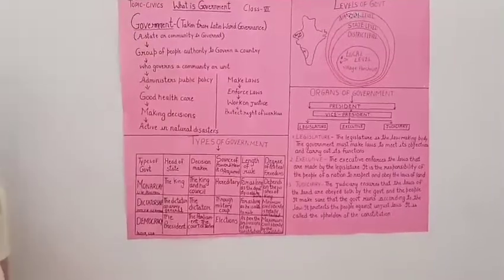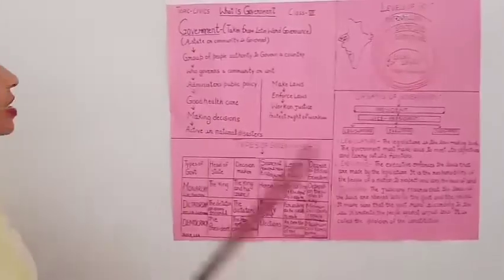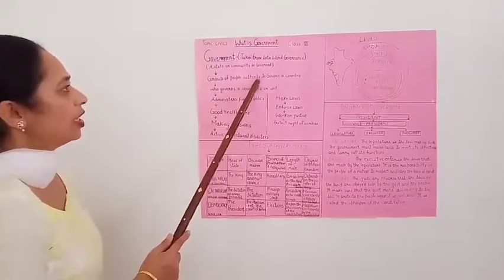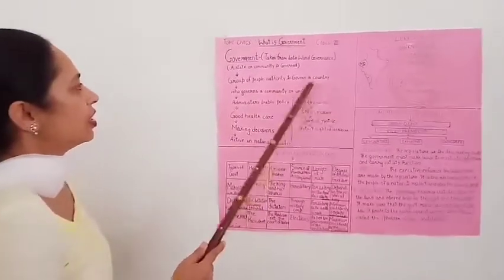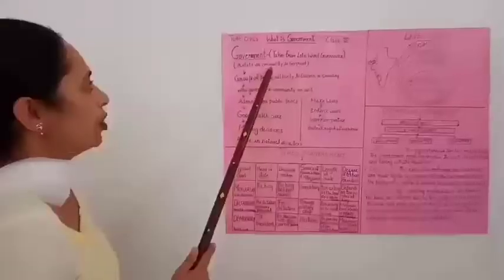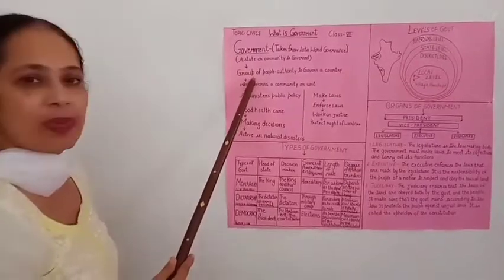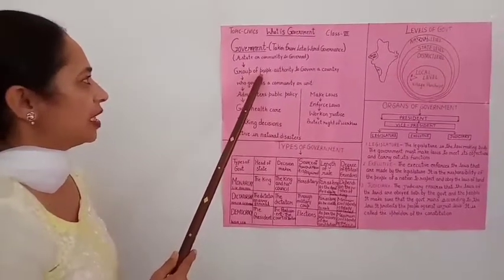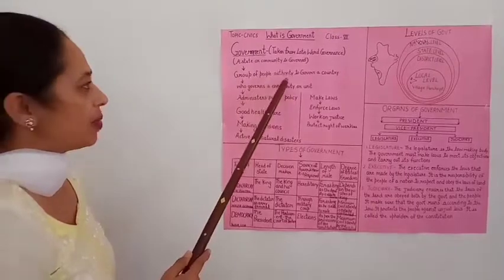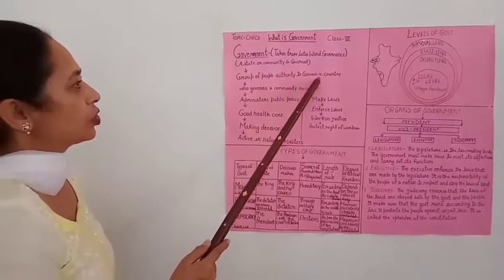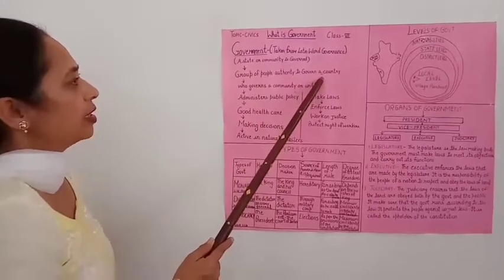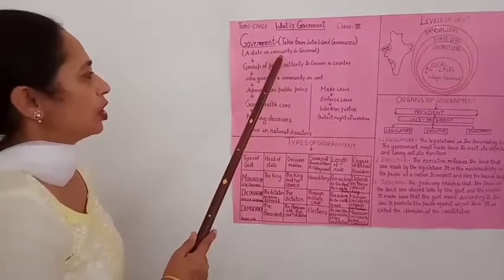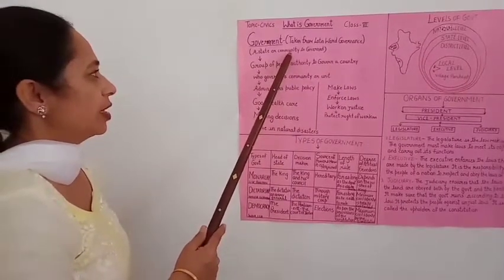Government means हमारे सरकार. Government is the group of people who have the authority to govern a country, a state or community. Group of people means our elected representatives — जिसके पास हमारे country को चलाने की, to govern a country, एक state को, एक community को govern करने की power है.